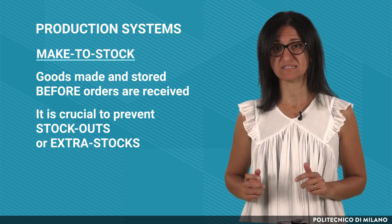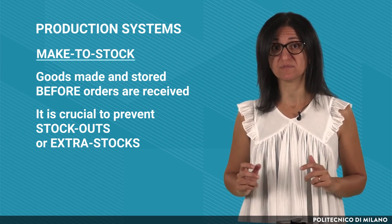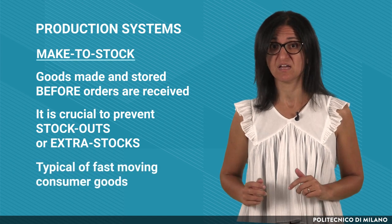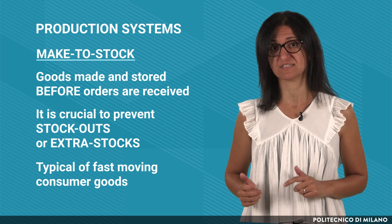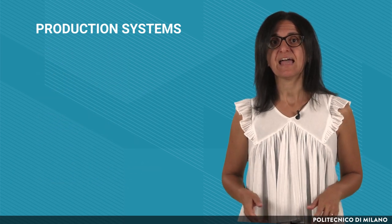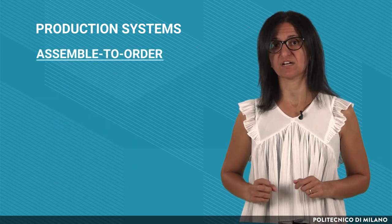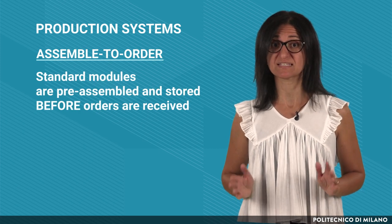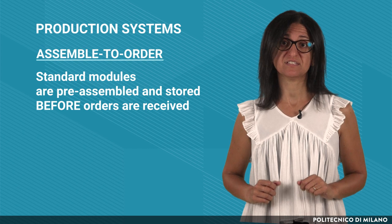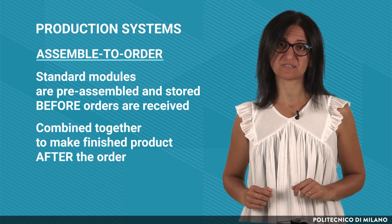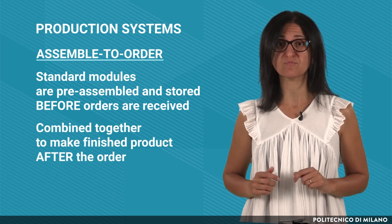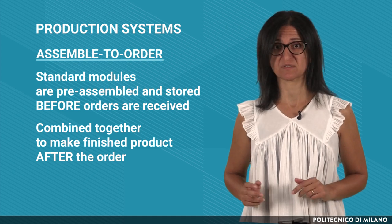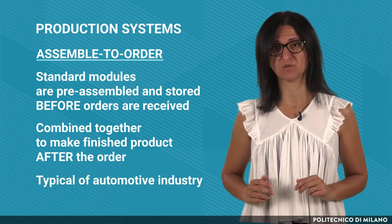Make-to-stock systems are largely adopted, for example, in the fast-moving consumer goods industry to produce packaged goods, detergents and so on. In an assemble-to-order production system, a number of standard modules are pre-assembled and stored. Then, after receiving the orders, they are combined together to make the finished products. Assemble-to-order systems are very diffused in the automotive industry.